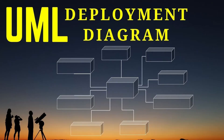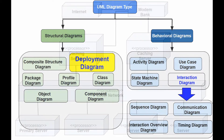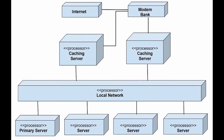A UML deployment diagram illustrates the configuration of runtime processing nodes and the components that live on them. A deployment diagram is a kind of structural diagram used in modeling the physical aspects of an object-oriented system. They are often used to simulate a static representation of a system deployment, for example, the topology of the hardware.